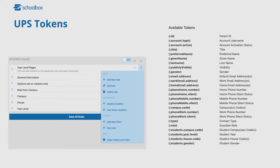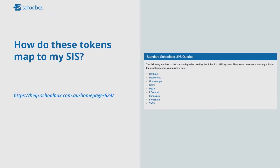And this will show you what tokens Schoolbox recognises. But then a question pops up: what does that mean when connected to our SIS? Our support team about two months ago actually went and put all of our UPS code up on Schoolbox Help, meaning that you can now see what that token links to in my SIS.